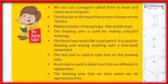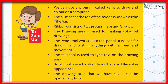Summary: We can use a program called Paint to draw and color on a computer. The blue bar at the top of the screen is known as the title bar. The Ribbon consists of two parts: Tabs and Groups. The Drawing Area is used for making colorful drawings. The Pencil tool works like a real pencil and is used for drawing and writing with freehand movement. The Text tool is used to type text on the drawing area. The Brush tool is used to draw lines that are different in appearance. The saved drawing can be opened anytime.